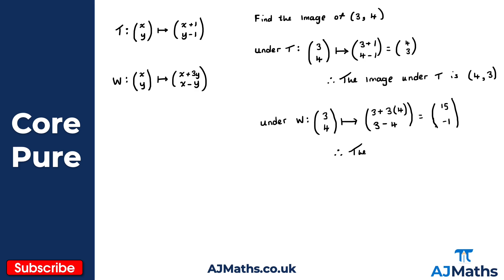So we get 15 and minus one. Therefore the image under W is 15, minus one. My x-coordinate is 15 and my y-coordinate is minus one.